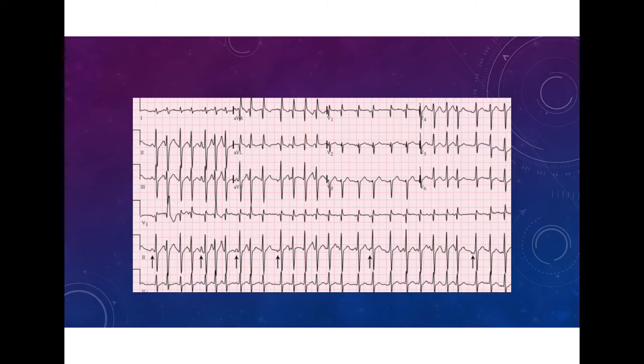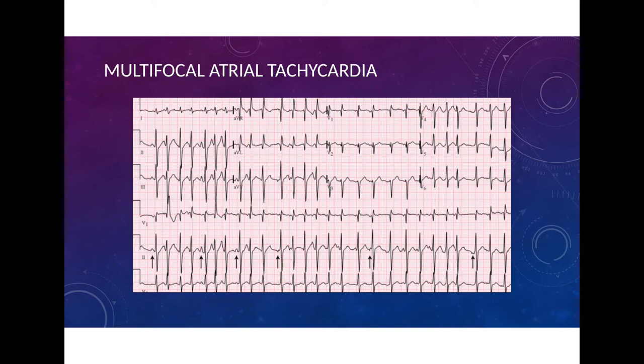Here's one more example of a narrow complex irregularly irregular tachycardia which can be confused for atrial fibrillation. We're helpfully provided with arrows pointing to atrial activity — we see a P wave here, a taller P wave here, a shorter P wave here, an inverted P wave here, and a biphasic P wave here. When we see multiple P wave morphologies alternating between each other — at least three different P wave morphologies in a given ECG — we can call that multifocal atrial tachycardia.